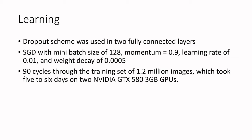For the learning setup: dropout was used in the two fully connected layers for regularization. Mini-batch size was 128, momentum was 0.9, learning rate was 0.01 with a decay rate of 0.0005 as training progressed. Training ran for 90 cycles through 1.2 million images and took five to six days on two NVIDIA GTX 580 3-gigabyte GPUs.